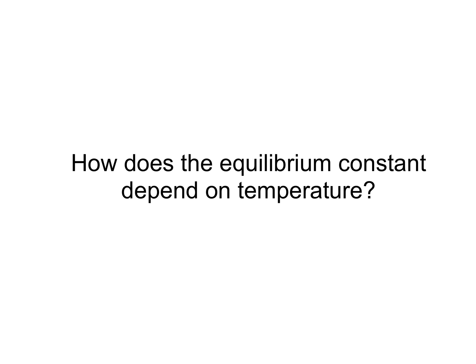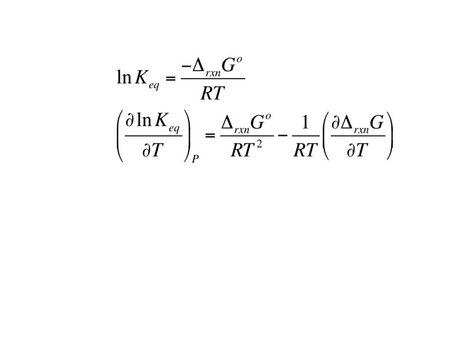Let's take a look at how the equilibrium constant depends on temperature. Recall that the natural log of the equilibrium constant is related to the standard state value for the delta G of reaction. If I want to know how the equilibrium constant depends on temperature, I need to look at the derivative of the natural log of the equilibrium constant with respect to temperature at constant pressure.